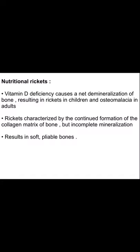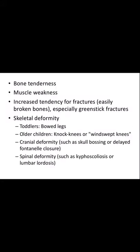Rickets is characterized by the continued formation of collagen matrix of bone but incomplete mineralization, resulting in soft, pliable bones. There will be bone tenderness, muscle weakness, increased tendency for fractures especially greenstick fractures, skeletal deformity like bowed legs and knock knees in toddlers, and cranial deformity such as skull bossing or delayed fontanel closure. Spinal deformity such as kyphoscoliosis or lumbar lordosis may also occur.